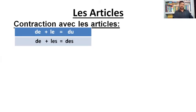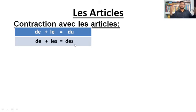Here you will see that it is basically the combination of 'de' plus 'le.' 'De' is the preposition and 'le' is basically the article. Rather than using 'de le' separately in a sentence, you will just use 'du' — 'du' in place of 'de le.' It is basically combining the two words to make one word, like 'du.'